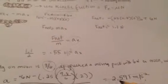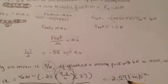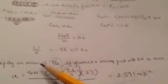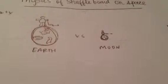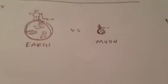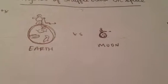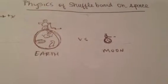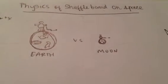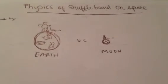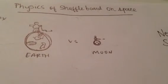So the moving puck has a greater acceleration on the Moon than on Earth. If we were having a contest between Earth and the Moon to see which puck goes faster, it would definitely be the Moon. That's the fun physics of shuffleboard in space — thank you and have a great day!